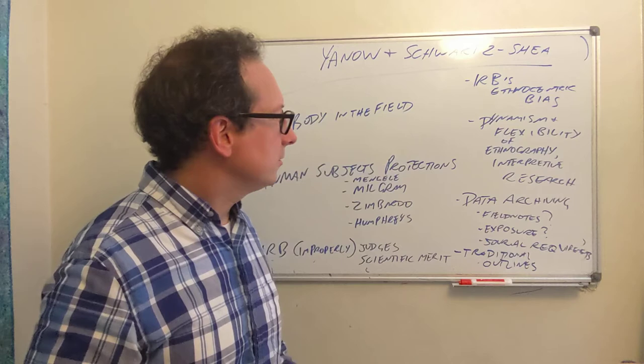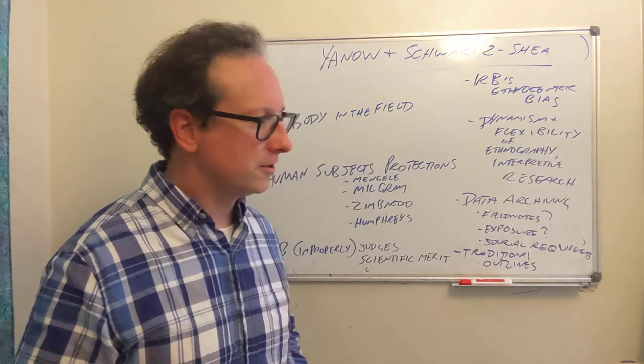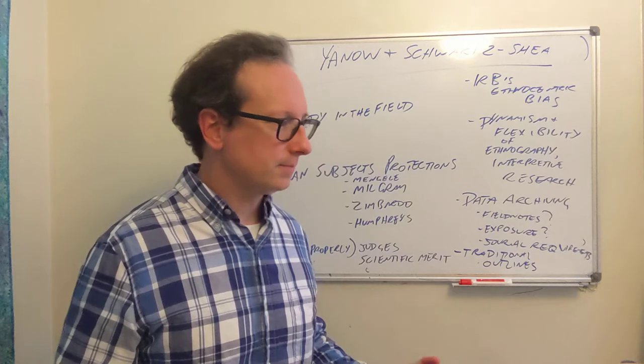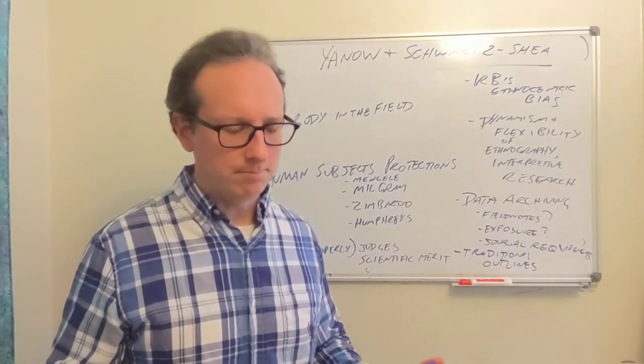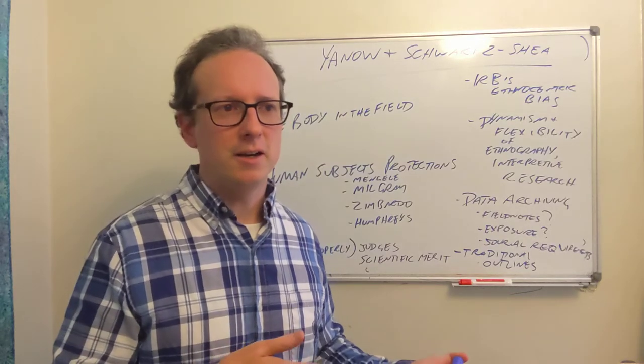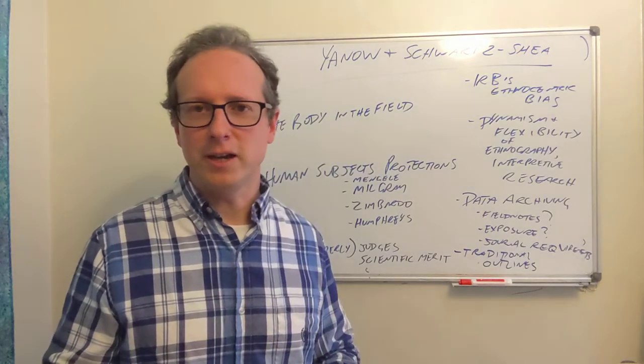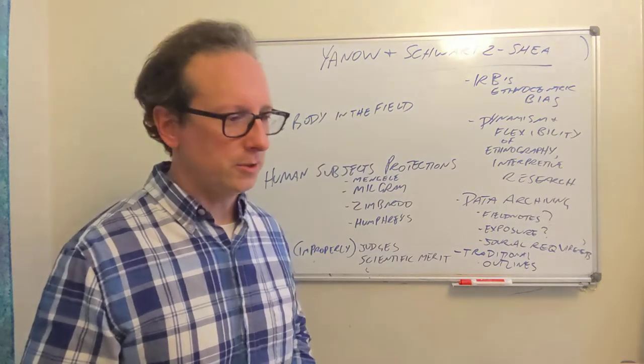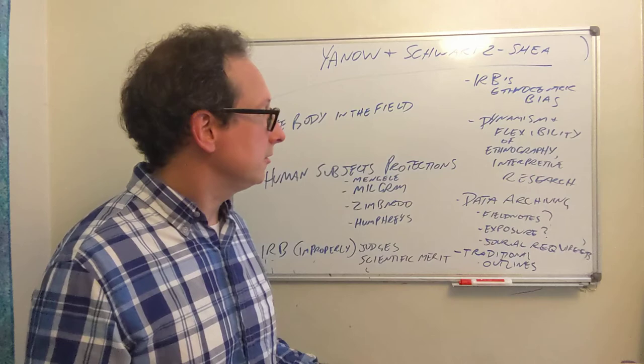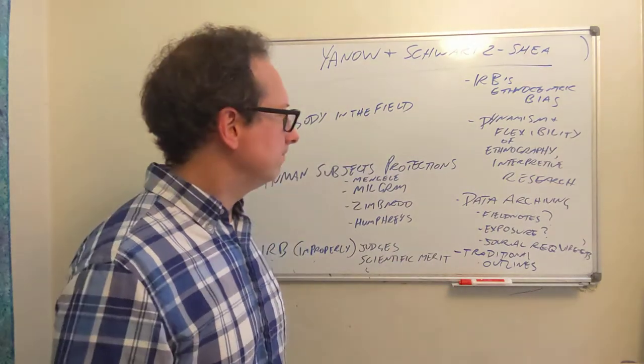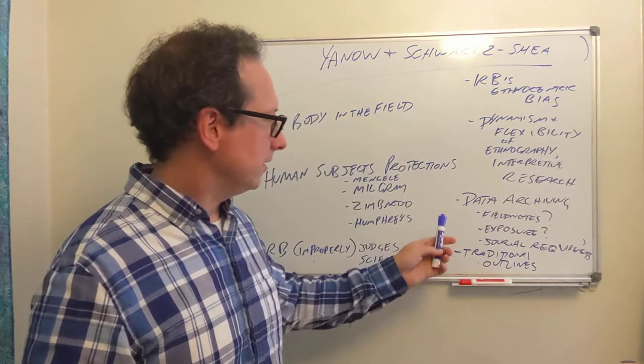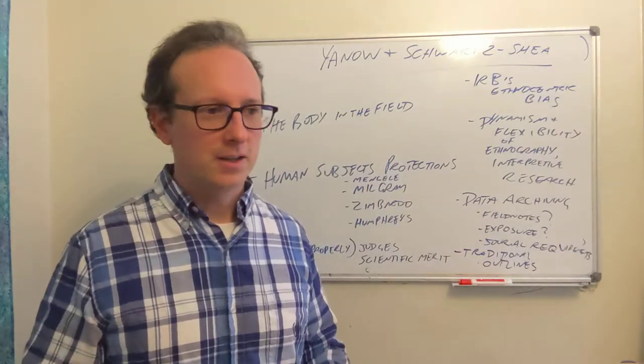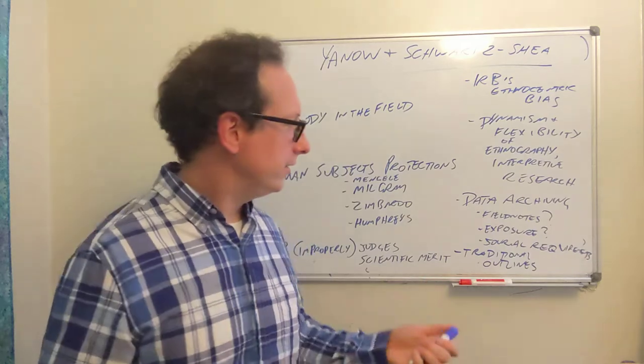So instead of the dynamism and flexibility of ethnography and interpretive research, there are all these rules and suppositions, and I can show you if you're curious, if anybody wants to see it, I can show you my, I think I'm ethically allowed, I'm pretty sure I am, to show you the questionnaire that you have to fill out for getting IRB approval. And it's like 20 pages long. And I can show you the kind of questions they asked and how I answered them. It's not a secret. That's part of the idea is transparency.